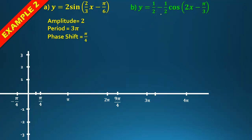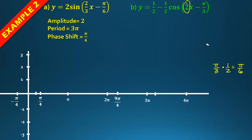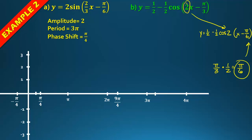This next example takes everything into consideration: y = ½ – ½cos(2x – π/3). We need to factor the 2 out of the argument. π/3 divided by 2 is the same as π/3 × ½ = π/6.